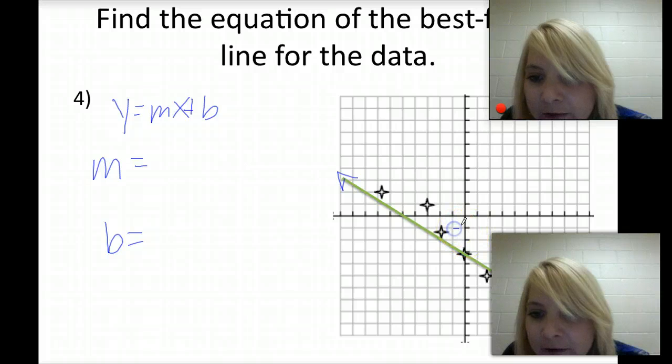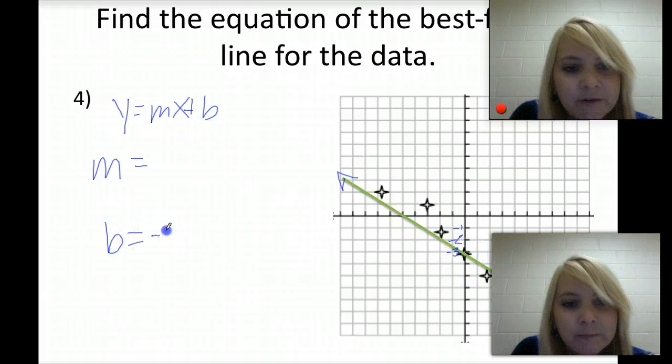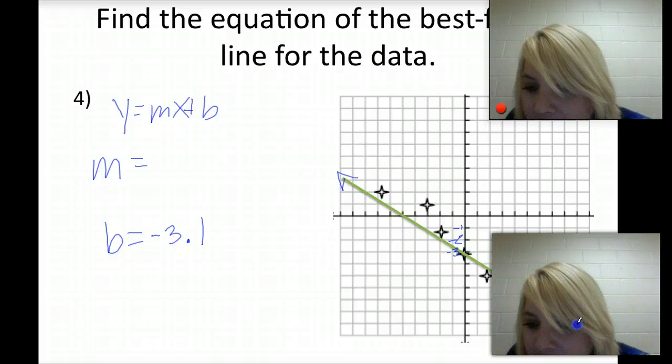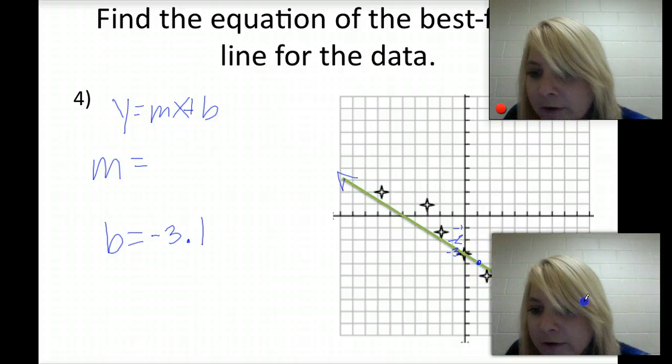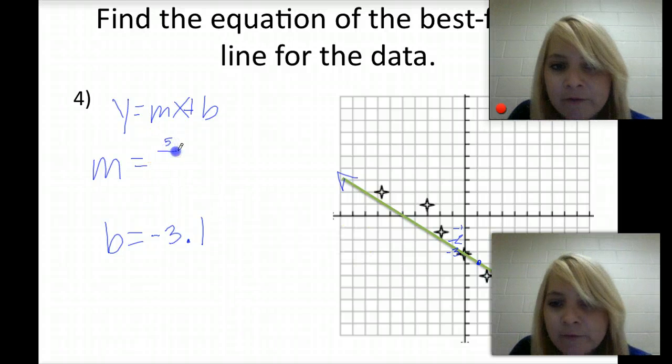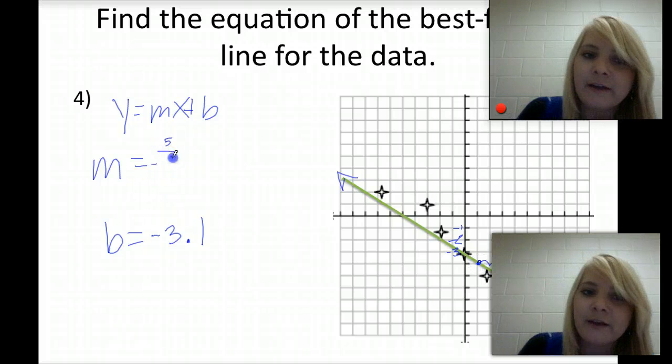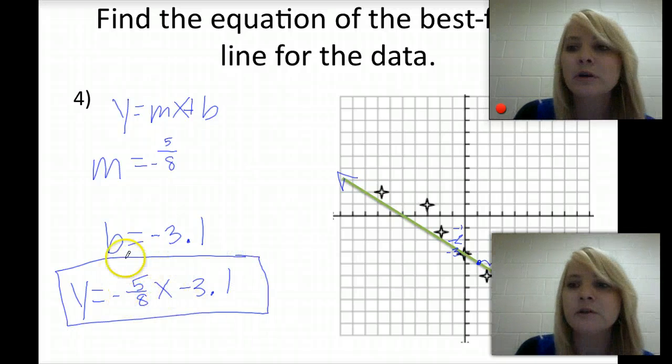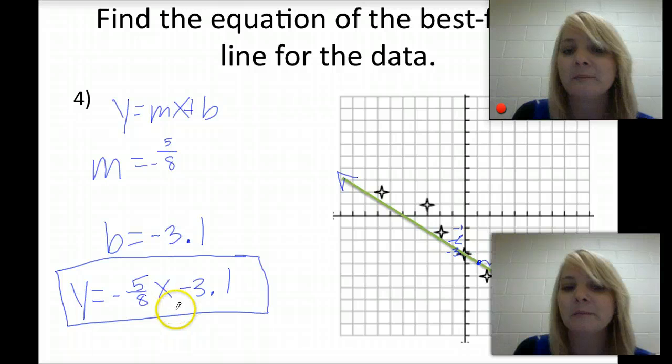So here we can look at our y-intercept. It falls a little bit below negative 3. So I'm going to say our y-intercept is negative 3.1. And then we're looking for points where we cross. Here at the bottom right, we have a point where we cross cleanly as well as up here. So we rise 5, and then we run 1, 2, 3, 4, 5, 6, 7, 8. And since we run to the left, that'll be negative 8. So our equation is y equals negative 5 eighths x minus 3.1. And one thing when you're dealing with slopes that are fractions, it's important that they remain as coefficients. So we don't write it as negative 5x over 8, but we write it as negative 5 eighths times x.